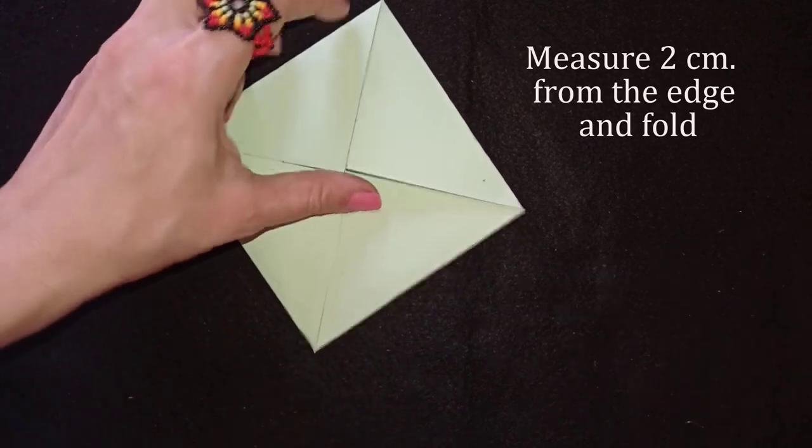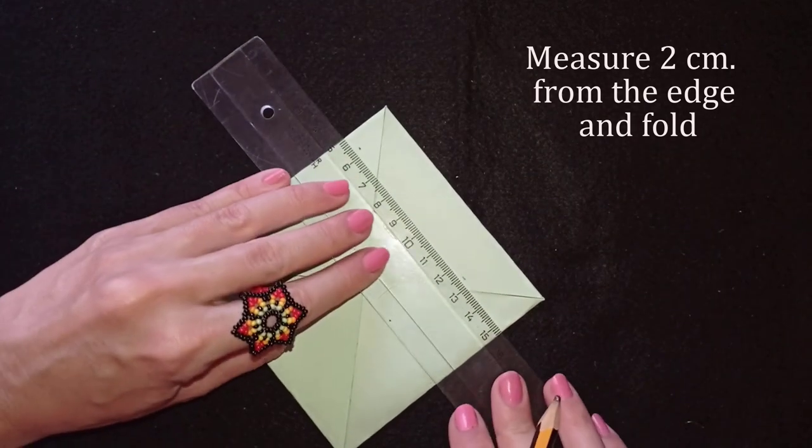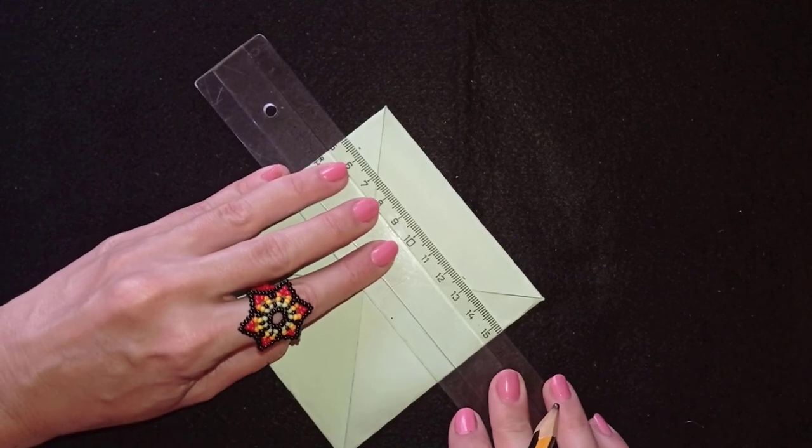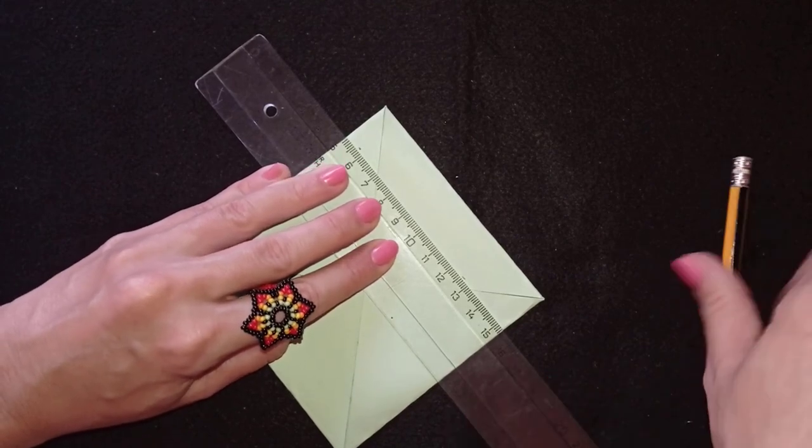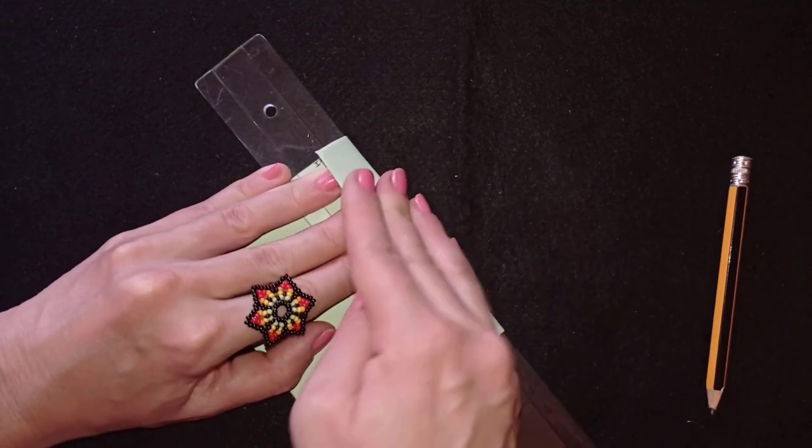So now as I measured it I will put here like this my ruler and I will fold it at these points.